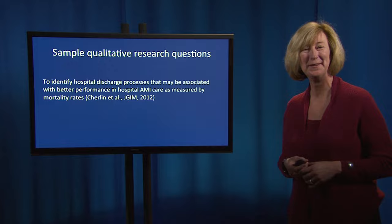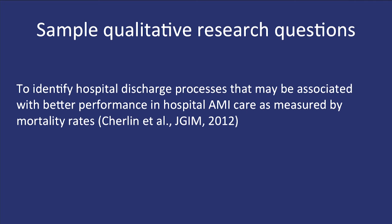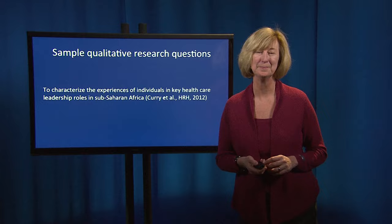A second example is a study by Emily Churlin and her team at the Yale Global Health Leadership Institute, interested in hospital performance and care of patients with heart attacks. The research question was: to identify hospital discharge processes that may be associated with better performance in hospital AMI care as measured by mortality rates. Again, we have the verb — to identify — the topic, and the setting. A third example from our team was: to characterize the experiences of individuals in key healthcare leadership roles in sub-Saharan Africa — again, naming the topic, population, and setting clearly in the research question.